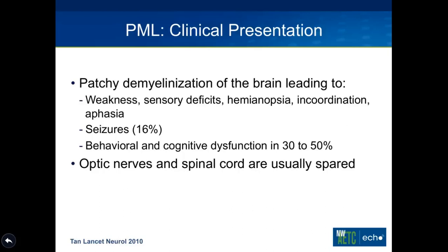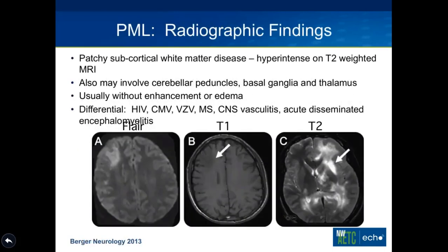Unlike MS, the optic nerves and spinal cord are usually spared, which can help in the diagnosis. Radiographic findings include patchy white matter subcortical findings that are hyperintense on T2-weighted MRI images. It can also involve the cerebellar peduncles, basal ganglia, and thalamus, though that's unusual. There is usually no enhancement or edema associated with PML, unlike PML IRIS. The radiographic differential includes nonspecific HIV white matter changes, CMV, VZV, multiple sclerosis, vasculitis, and acute disseminated encephalomyelitis.